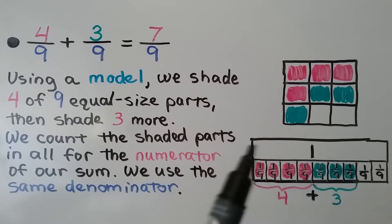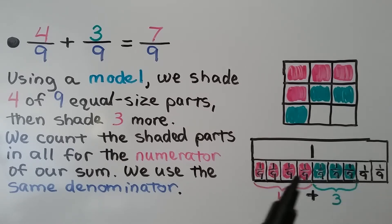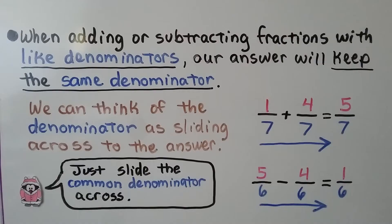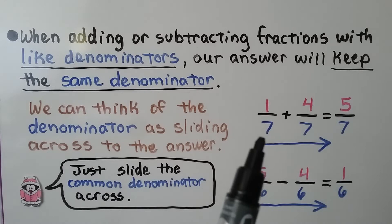We use the same denominator. We can also use a fraction strip or bar: here's one whole. We have four-ninths plus three more one-ninth parts, giving us seven-ninths. When adding or subtracting fractions with like denominators, our answer will keep the same denominator.